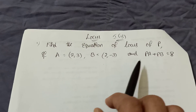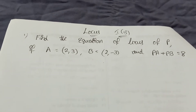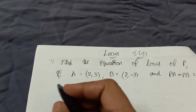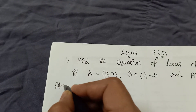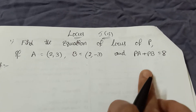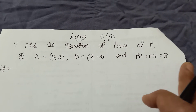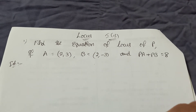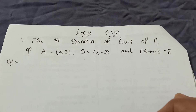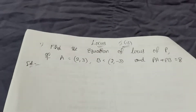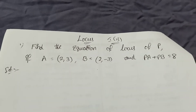So many students are stuck on how to do these problems — like PA plus PB equals 8, or PA plus PB equals 6, or when minus is there. I am explaining here how to solve them in 5 minutes. Watch carefully and you will get full 4 marks.